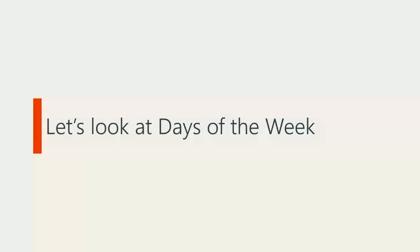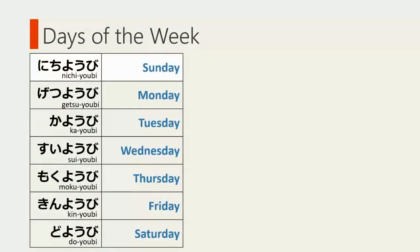Let's look at days of the week. Sunday is 日曜日。 Monday is 月曜日。 Tuesday is 火曜日。 Wednesday is 水曜日。 Thursday is 木曜日。 Friday is 金曜日。